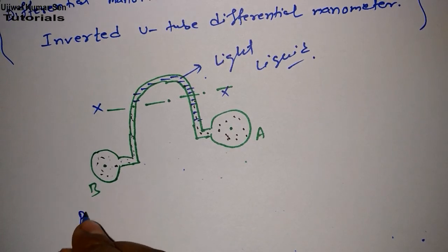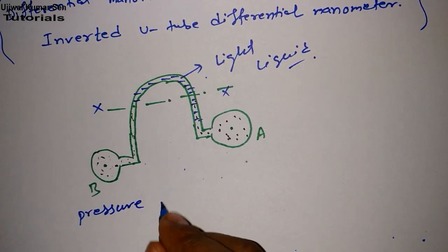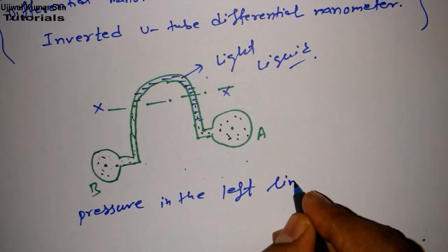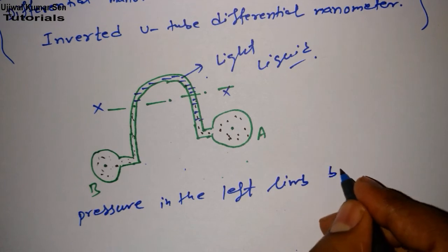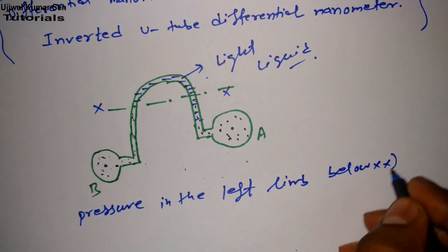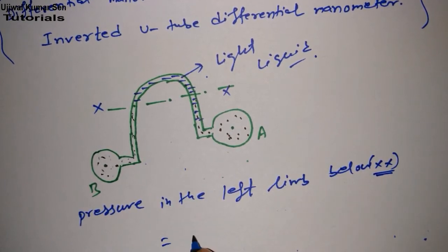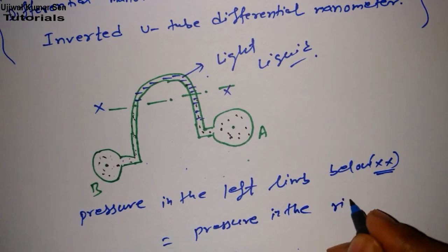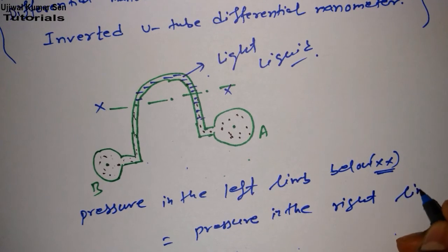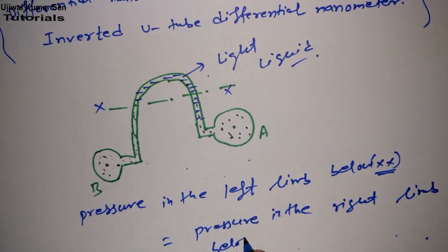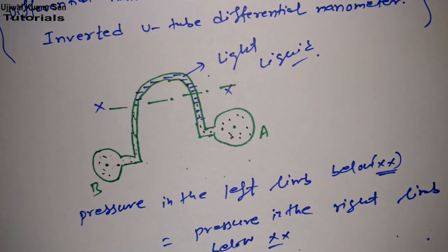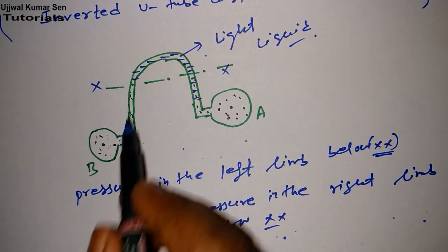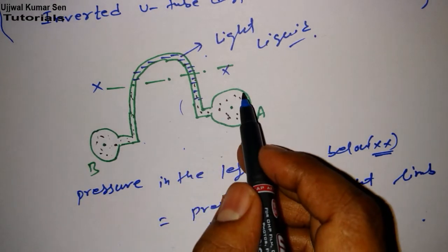What is that? Pressure in the left line below axis - need to remember this below axis - and pressure in the right line below axis. Both pressures should be equal. First we have to do left line, then right line.